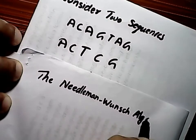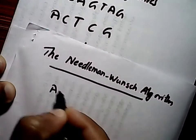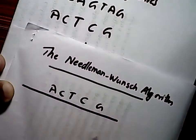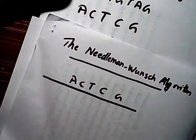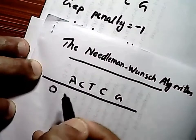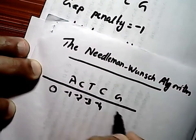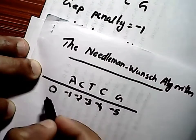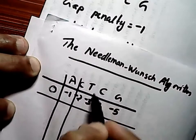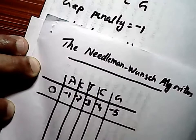The dynamic programming algorithm computes optimal sequence alignments by filling in a table of partial sequence alignment scores until the score for the entire sequence alignment has been calculated. At the outset of the algorithm, the first row and column of the table are initialized with multiples of the gap penalty, as shown here.